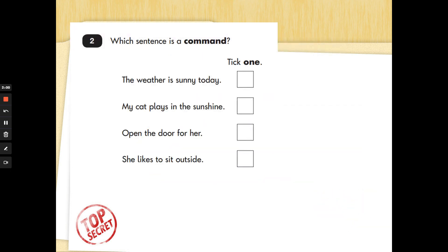Number two. Which sentence is a command? Which one is telling you to do something? Let me read them to you. The weather is sunny today. My cat plays in the sunshine. Open the door for her. She likes to sit outside. Let me read them again. The weather is sunny today. My cat plays in the sunshine. Open the door for her. She likes to sit outside. Think you've got it? There you go. Open, which is a verb. The door for her. Well spotted.